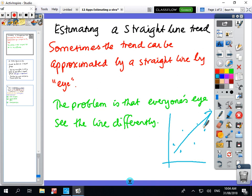Sometimes the trend can be approximated by a straight line by eye, but the problem is that everyone's eye sees the line differently.